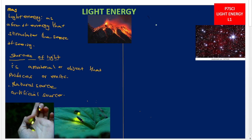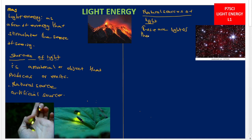Natural sources of light produce their light naturally and by their own. These are sources or light sources that produce — or emit — their own light naturally.